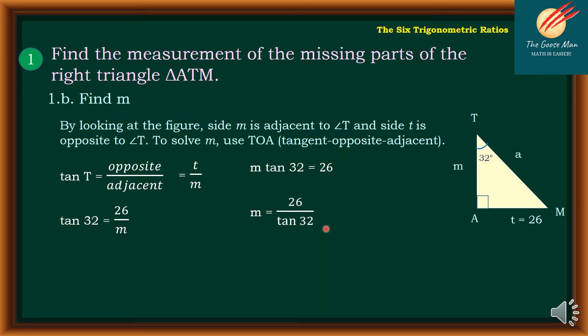Using our calculator, just simply press 26 over tangent 32 and equal sign. So M equals 41.61 units, correct to two decimal places.